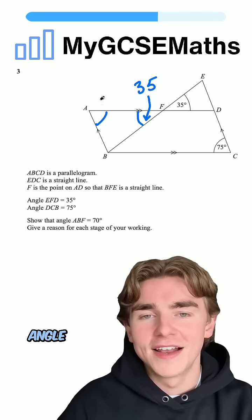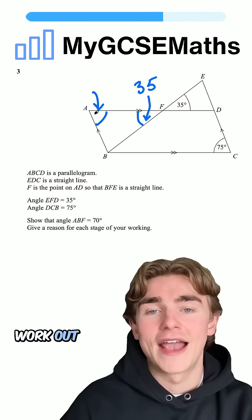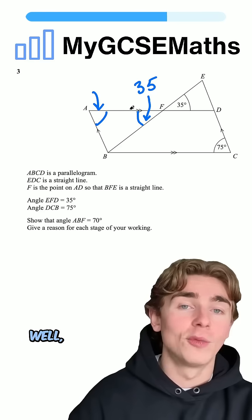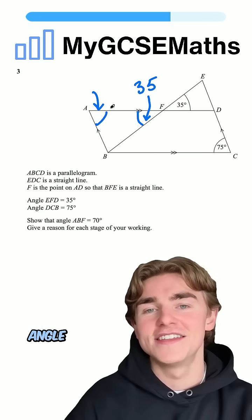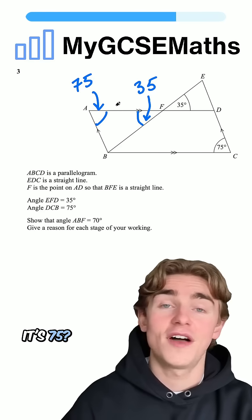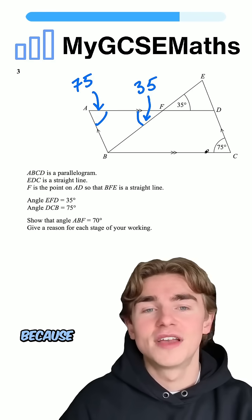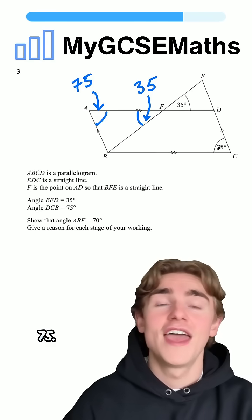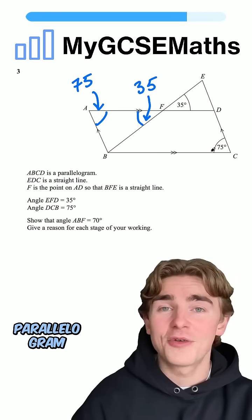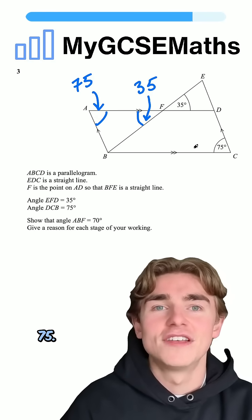What about this angle here? Because this is the next one we want if we want to work out angle ABF. Well, we can say that this angle is 75. Why? Because this angle here is 75 and opposite angles in a parallelogram have to be the same. So this angle here is 75.